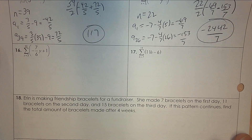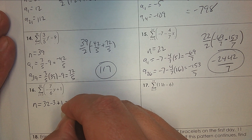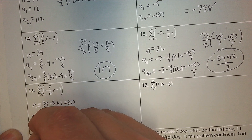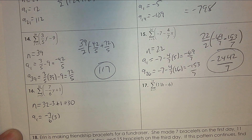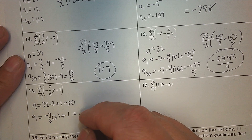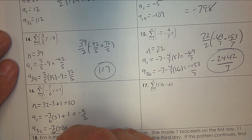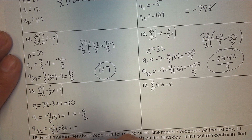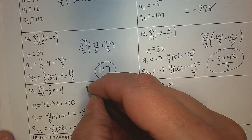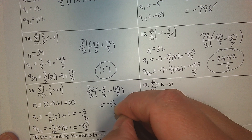Number 16 — how many terms: subtract, so 32 take away 3, then add 1 — that's the counting principle. So I have 30 terms. The first term — plug in 3. Common denominators, you can use a calculator — the first term is negative 5 over 2. Then plug in 32 — you get negative 109 over 3. Then the formula: how many terms divided by 2, times (negative 5 over 2 plus negative 109 over 3). Use a calculator and you get negative 582.5.